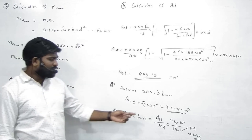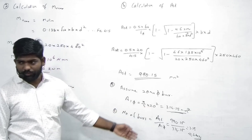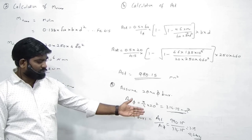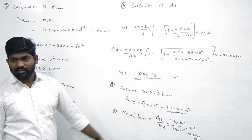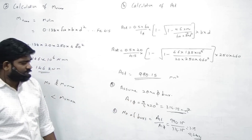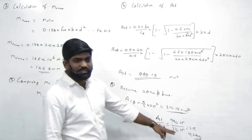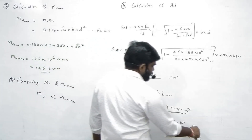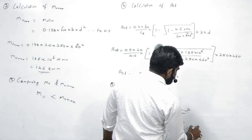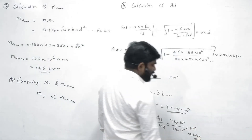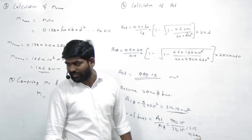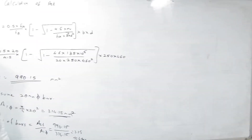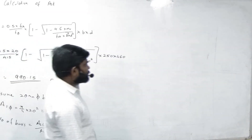Else 22 mm kar sakte ho toh approximately 3 aa jaayega. But 3.15 almost chhota value hai — loss hua builder ka. Koi option nahi, aap zyaada de sakte ho, kam nahi. Requirement hai 3.15, so at least 4 dalo.